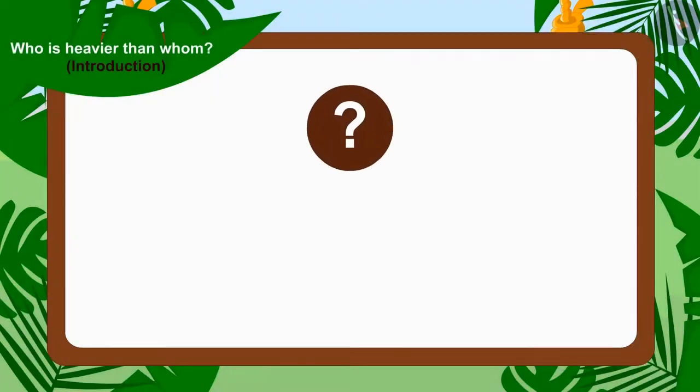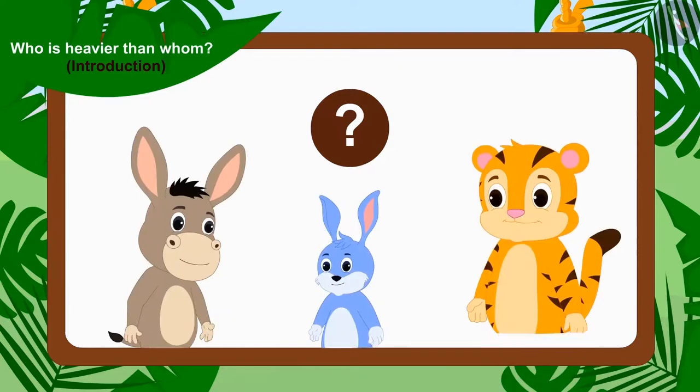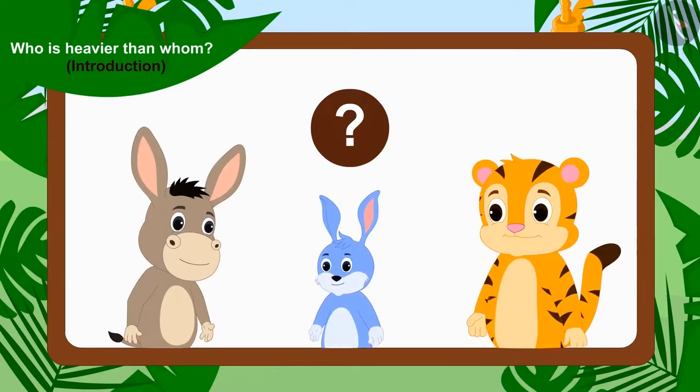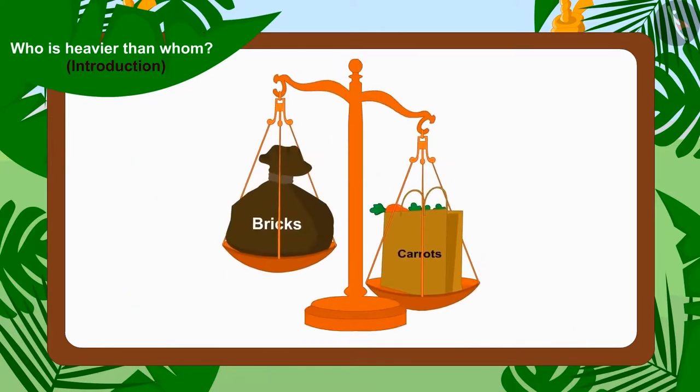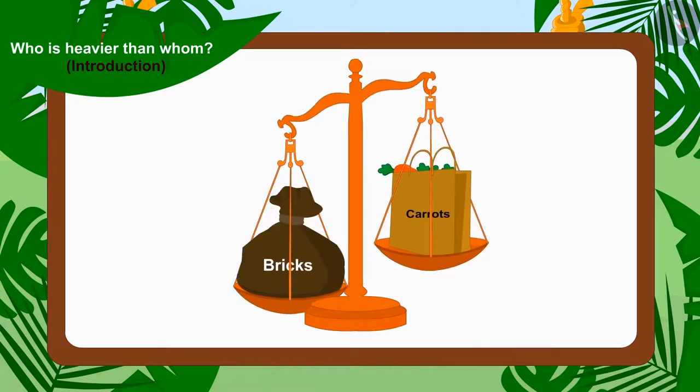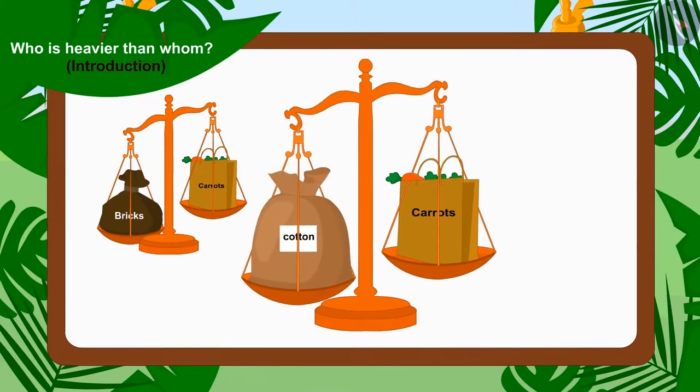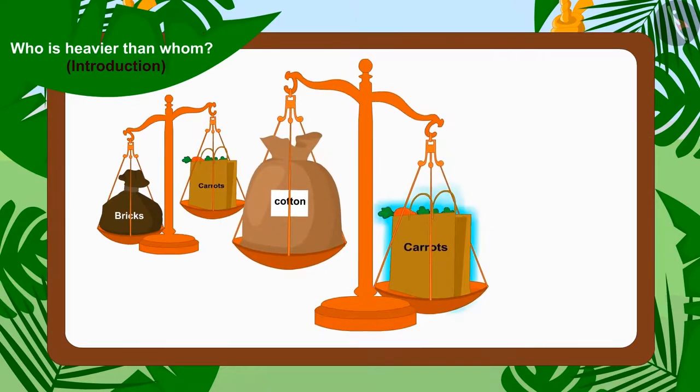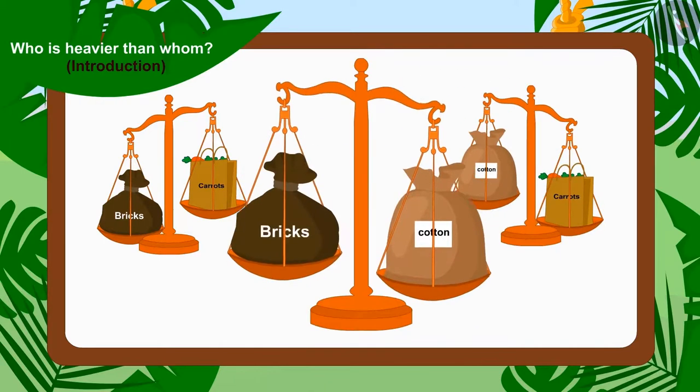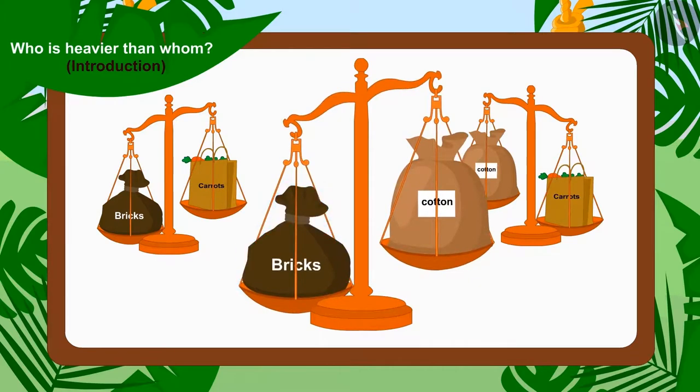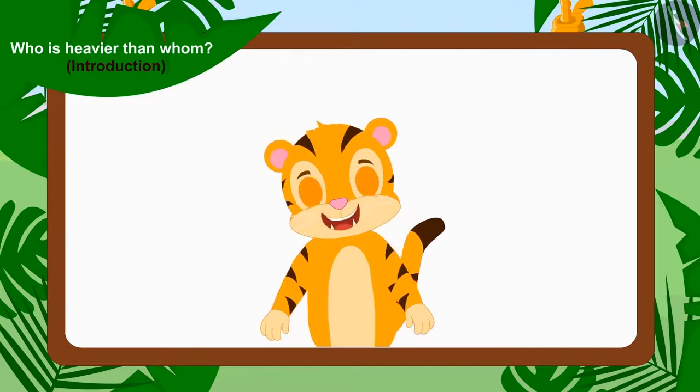Children, can you tell who will be the winner? Because the sack filled with Shere Khan's bricks is heavier than Bunny's bag filled with carrots, and Bunny's bag of carrots is heavier than Bhoola's sack of cotton. Therefore, Shere Khan's sack filled with bricks is also heavier than Bhoola's cotton sack. In this way, Shere Khan is the winner of this competition.